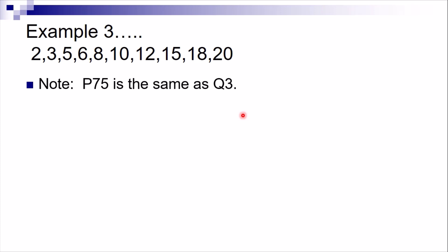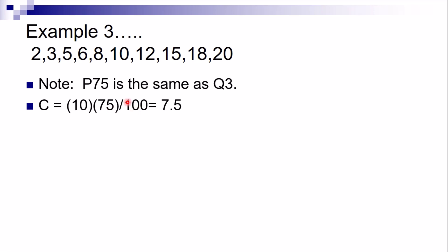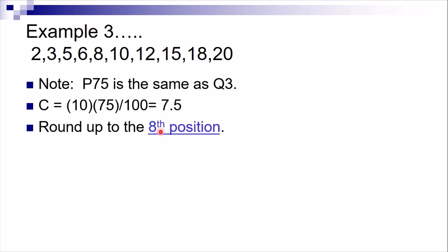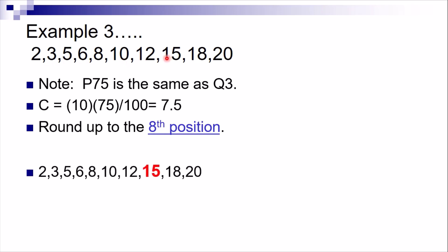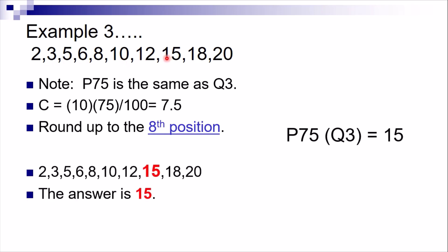Find Q3 or P75: c = 10 × 75 ÷ 100 = 7.5. Since 7.5 is a decimal, round up to the 8th position. The 8th value in the data is 15. Therefore Q3 = P75 = 15. That is how we find percentile values.